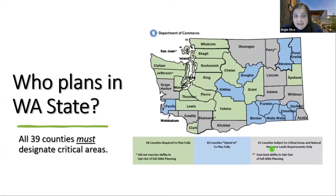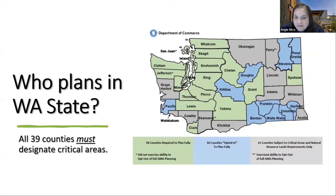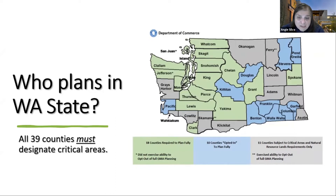Just to look at the statewide picture, Kitsap County and the cities within are not the only jurisdiction in Washington State that has to plan to GMA. If you look at the mint color on your screen, all those jurisdictions and counties — 18 in total — must fully plan to the GMA requirements. And if you look at the light blue color, predominantly on the eastern side of the state, certain jurisdictions can opt in to fully plan as a voluntary thing. But statewide, monitoring as part of GMA includes protection of critical areas and natural resource land.